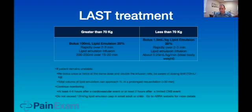Then run an infusion at 0.25 milliliters per kilogram per minute based on ideal body weight. If the patient is unstable, rebolus once or twice at the same dose and double the infusion rate. Be aware of the dose limit, which is approximately 12 milliliters per kilogram. In a prolonged resuscitation, the total volume of lipid emulsion can approach one liter.